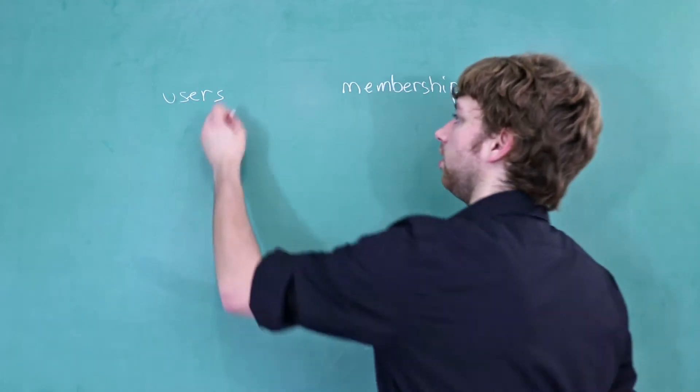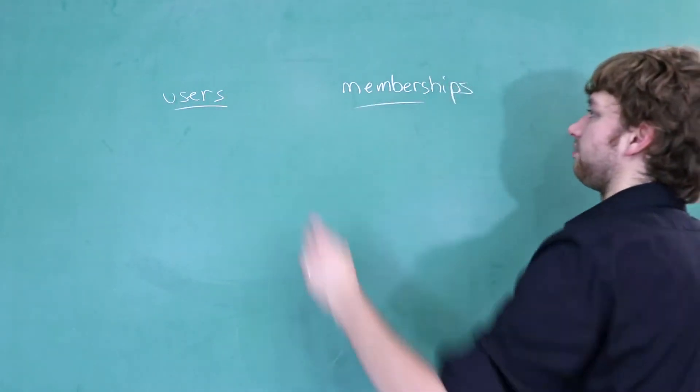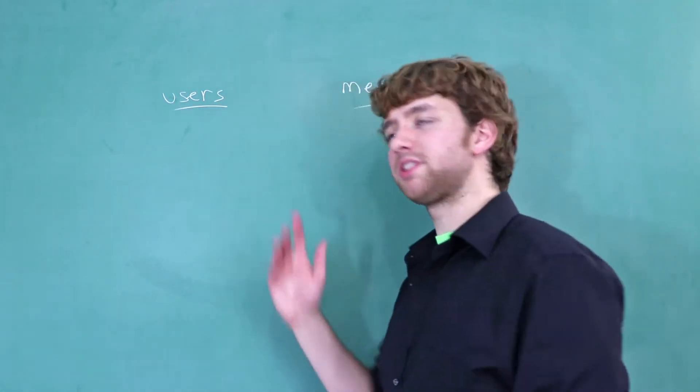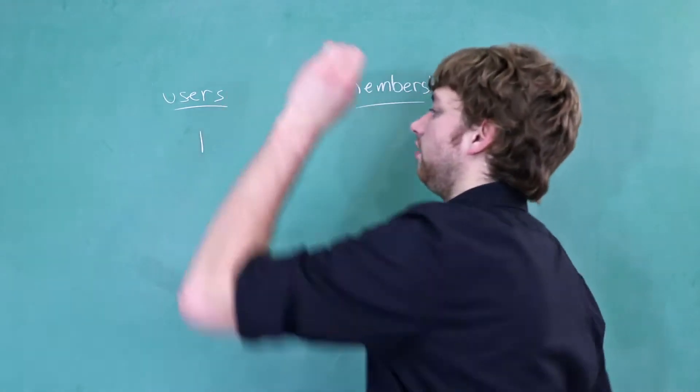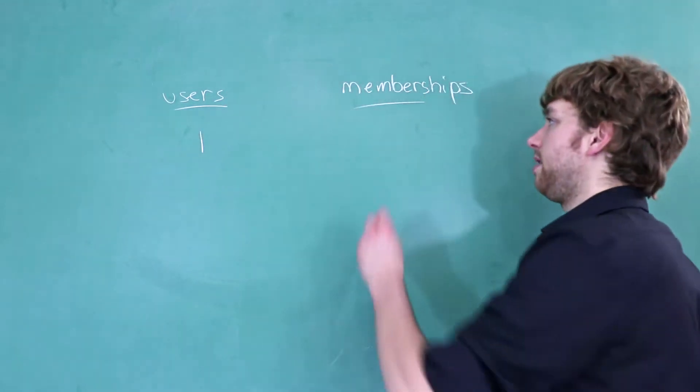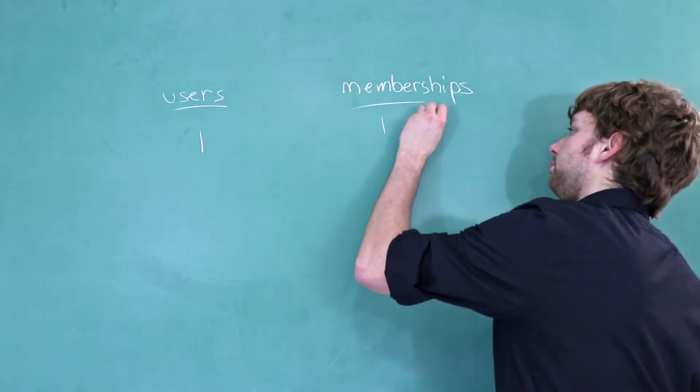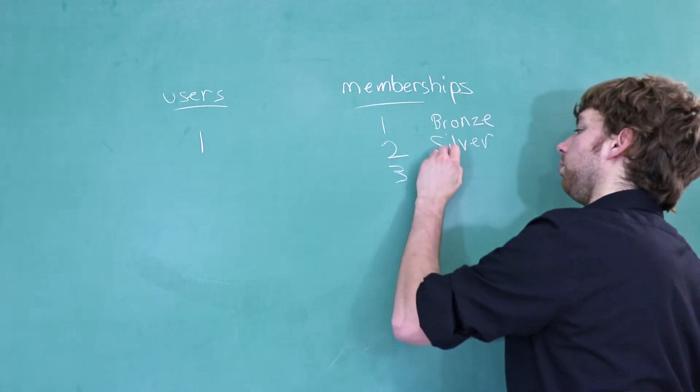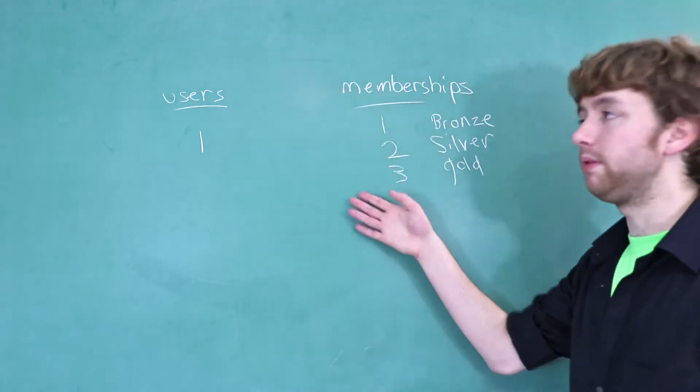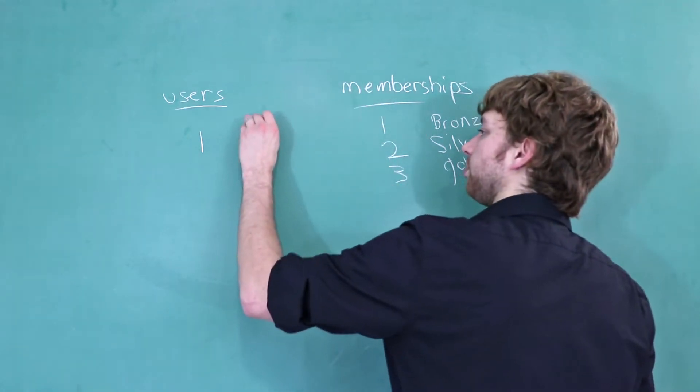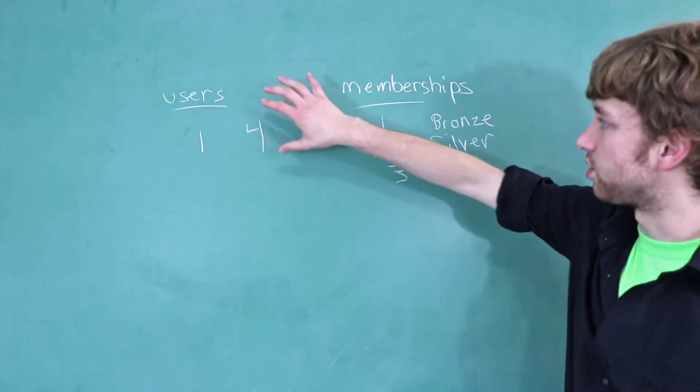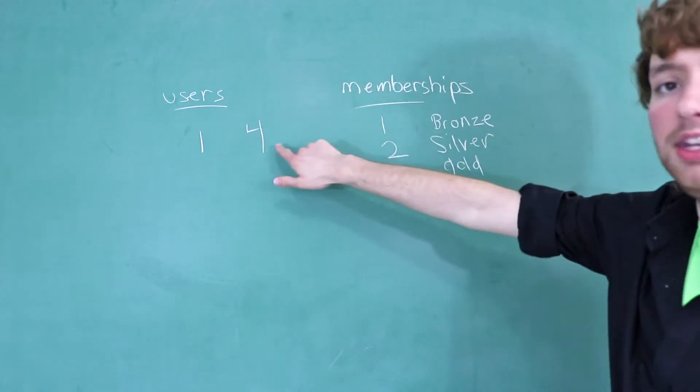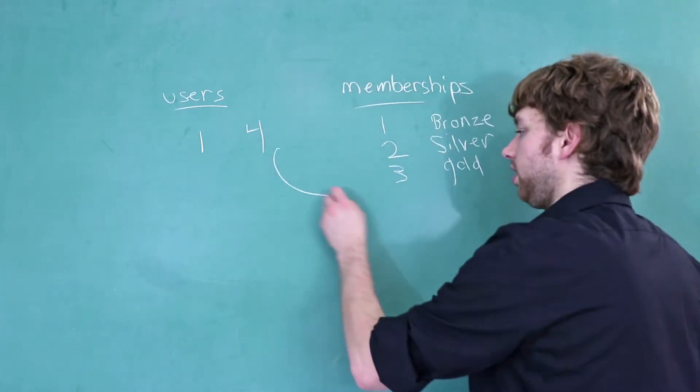So I gave you this example a little bit ago. Let's say you have users and you have members. Now one specific user has the ID of one. Now there's three types of memberships. One is going to be bronze, two silver, and three gold. Well, this user is going to reference one of the memberships. So let's say this user puts a four. The problem is there's no membership with that ID. So this is literally pointing to nothing.